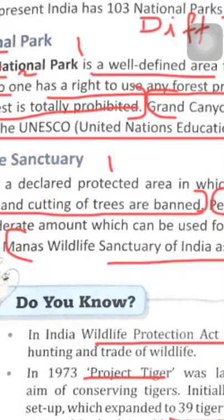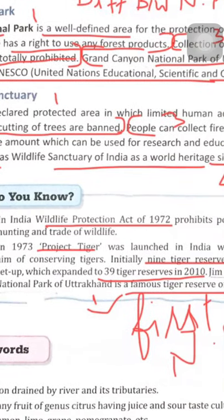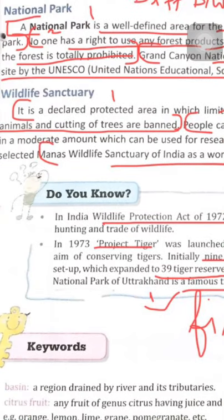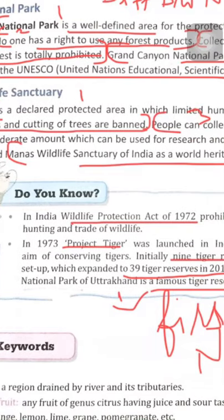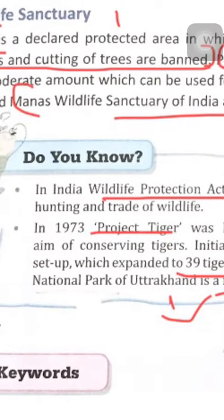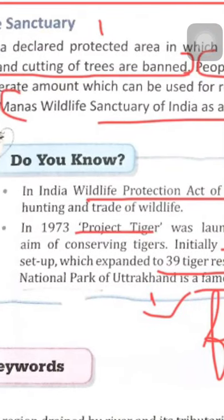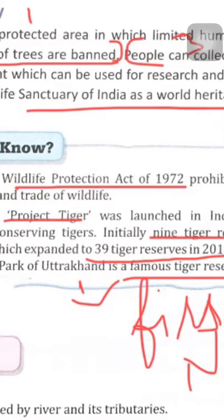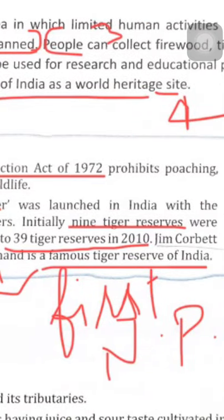Manas Wildlife Sanctuary is a tiger reserve. In India, the Wildlife Protection Act of 1972 prohibits poaching, hunting and trade of wildlife. In 1973, Project Tiger was launched with the aim of conserving tigers, and initially 9 tiger reserves were created.